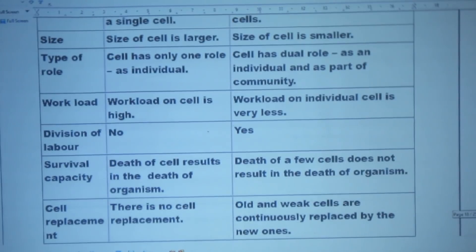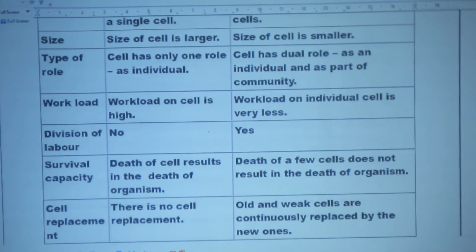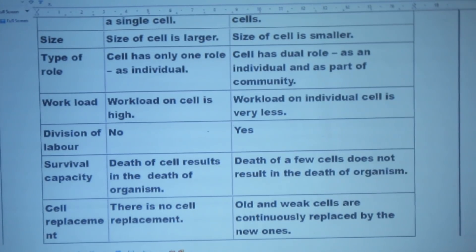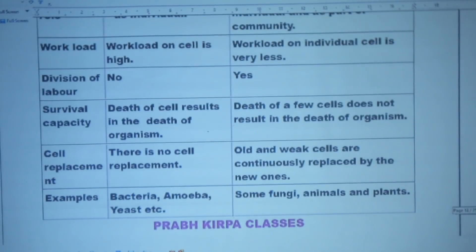Division of labor: in unicellular organisms there is no division of labor, but in multicellular organisms there is. Survival capacity: in unicellular organisms, death of the cell results in the death of the organism, but in multicellular organisms death of a few cells does not result in the death of the organism. Cell replacement: in unicellular organisms there is no cell replacement, but in multicellular organisms old and weak cells are continuously replaced by new ones.